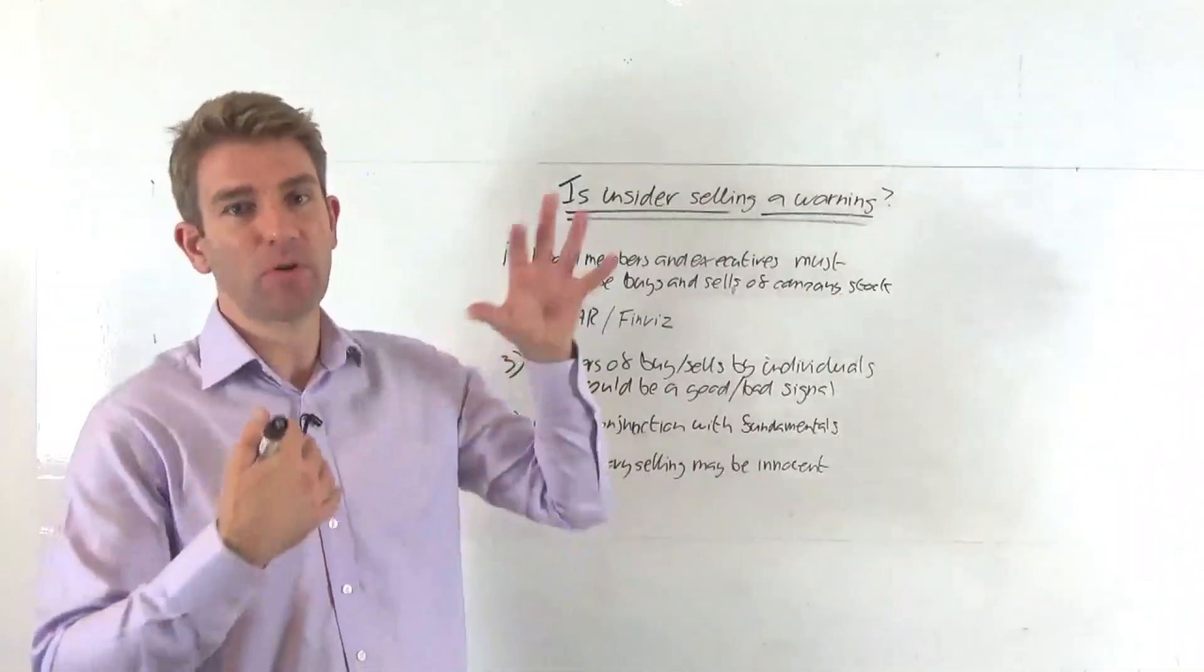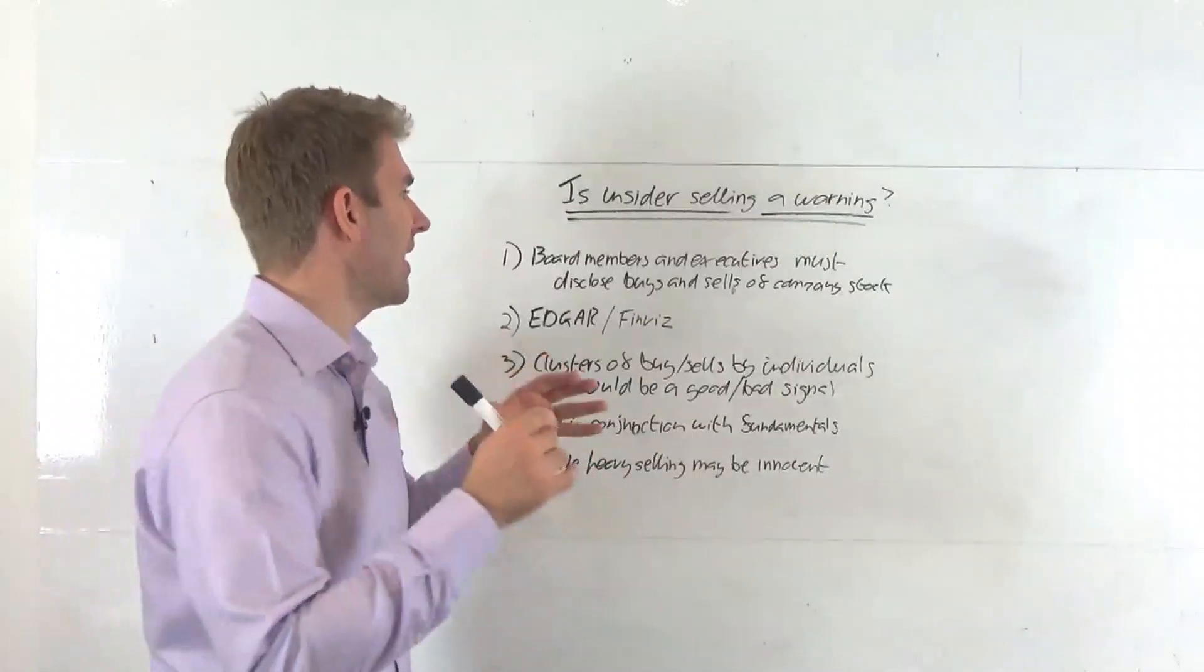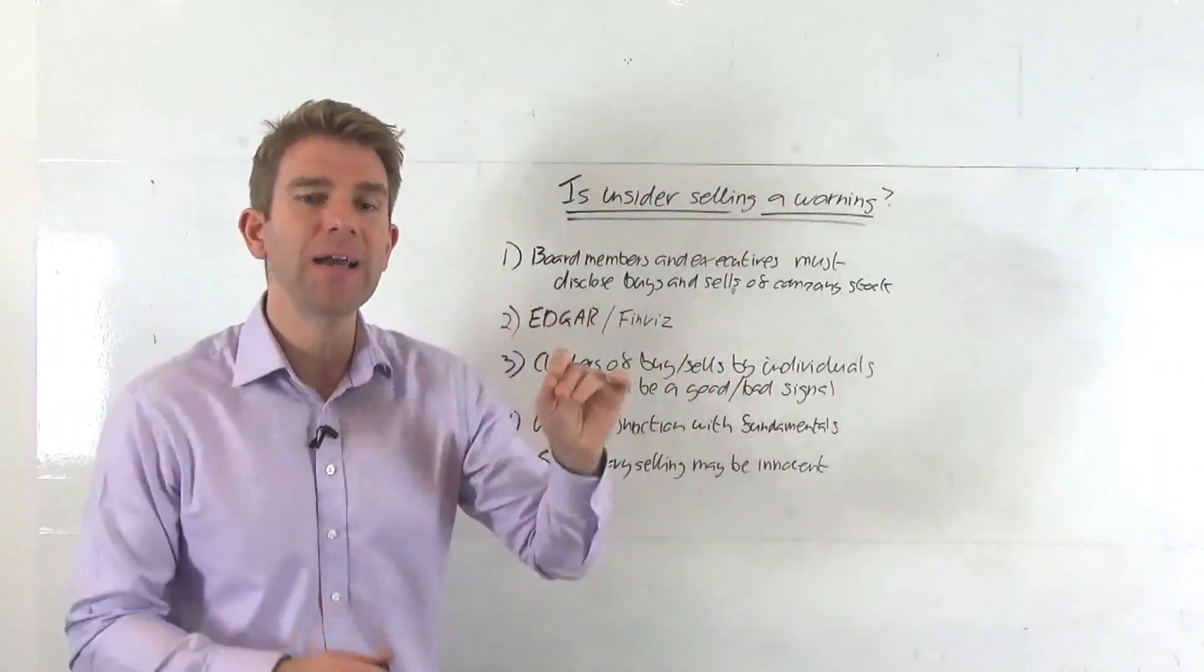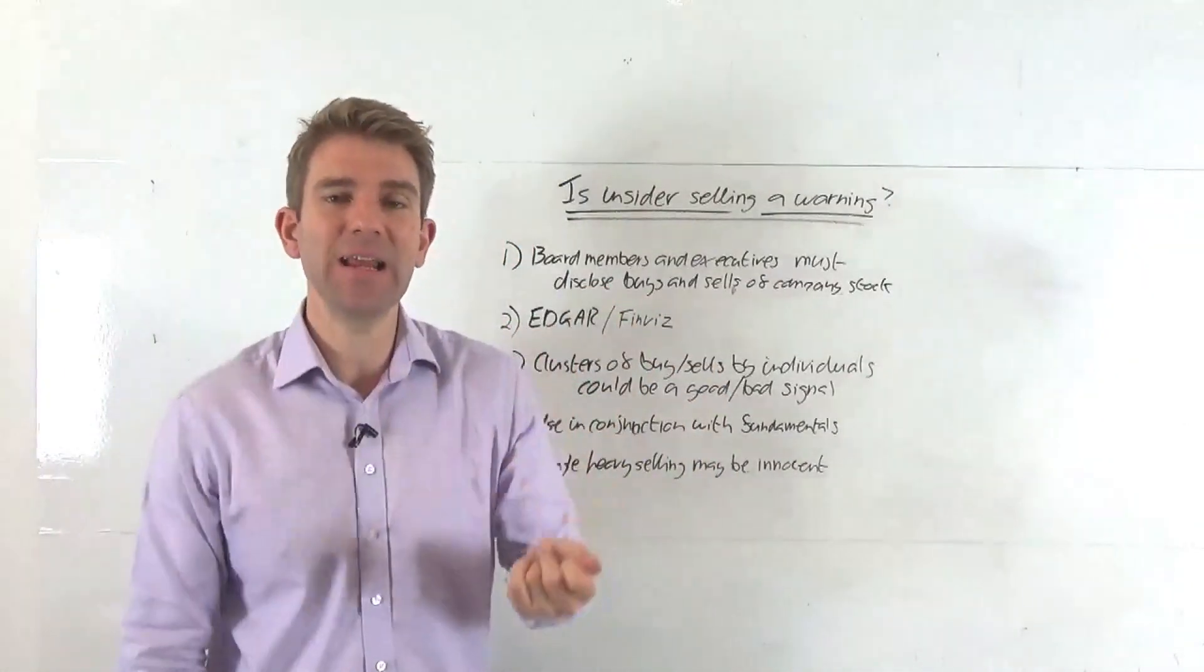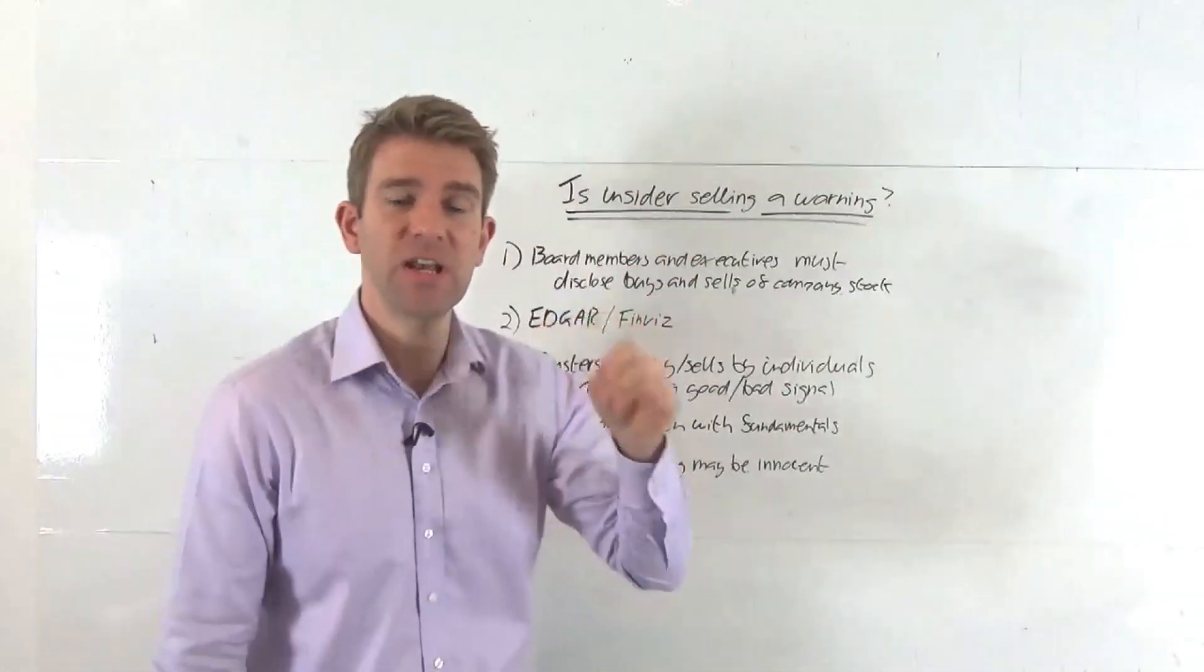In the UK and US, I'm not familiar with others, but there's likely something similar: board members and executives must disclose buys and sells of a company stock. This is to prevent insider dealing. Let's distinguish those two: insider selling versus insider dealing.